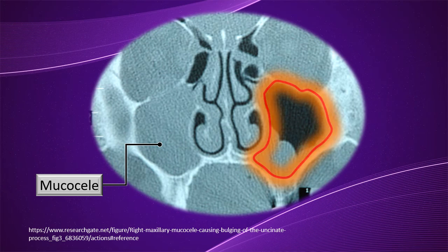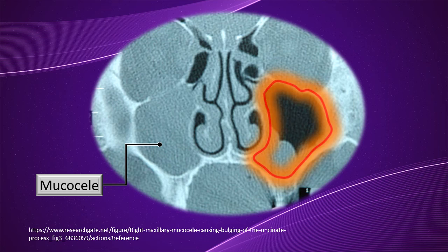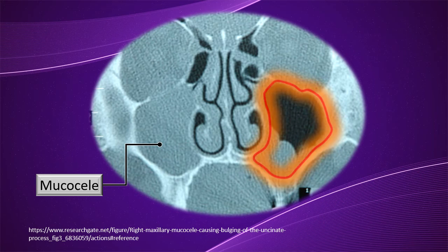The maxillary sinus can also be involved as part of overall facial fractures. A wall of the maxilla may get broken. If the anterior and posterior walls are involved, the anterior superior alveolar and posterior superior alveolar vessels can get cut, adding to bleeding. If the medial wall is broken, the blood vessels supplying the lateral wall of the nasal cavity will also be involved.